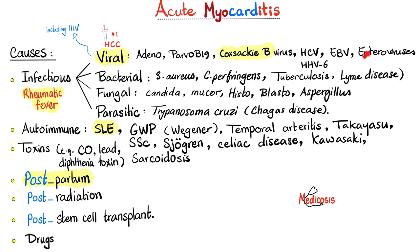Vaccines against these viruses, since they have some viral proteins or they make your body make viral proteins, can also be associated with acute myocarditis or pericarditis. Bacteria: Staph aureus, Clostridium perfringens, tuberculosis, and Lyme disease. Fungi: Candida, Mucor, Histoplasmosis, Blastomycosis, and Aspergillus.